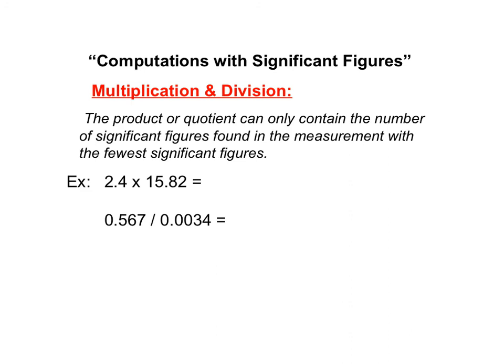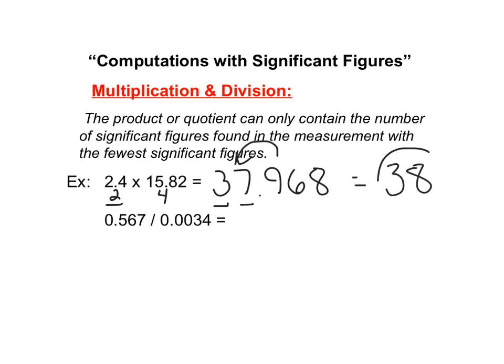The last thing to talk about with significant figures is multiplying and dividing. We want to round our answer to the fewest number of significant figures when multiplying and dividing. In the first example, 2.4 has two significant figures and 15.82 has four. Two is the smallest, so my answer can only have two. Computing 2.4 × 15.82 gives 37.968, and rounding to two sig figs — counting from the left — the 9 rounds up the 7, giving 38.